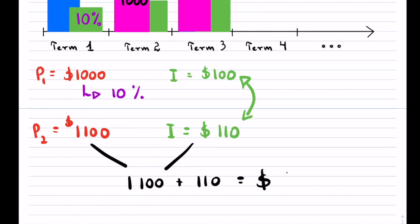And your new starting point, all of a sudden, becomes a little bit bigger. So notice now, after just the two terms, you already have $210 more. So compounding is just simply bringing in your principal and your interests together at the end of each term that you have.